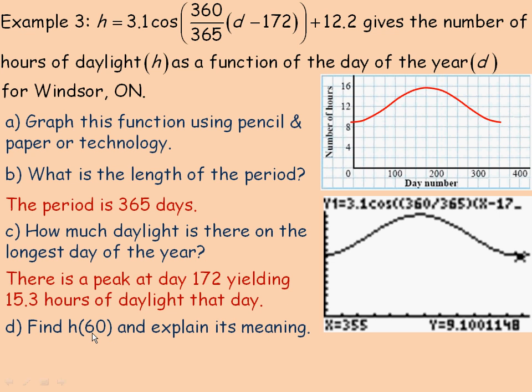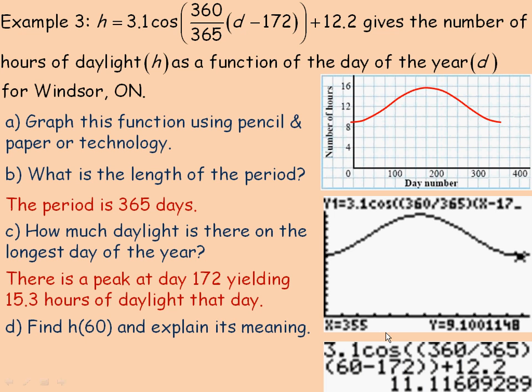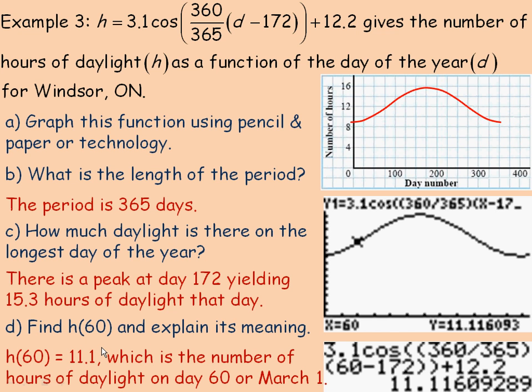And the last question we're asked to find h of 60 and explain its meaning. So to find h of 60, we would plug 60 in place of d here. And so there's the 60. And if we evaluate that, we get 11.1. We could also use the graphing calculator and trace and plug 60 in place of X. And so we see also we have 11.1 hours of daylight. So h of 60 equals 11.1. That 11.1 is the number of hours of daylight on the 60th day of the year, or March 1st. And that's the end of the PowerPoint.